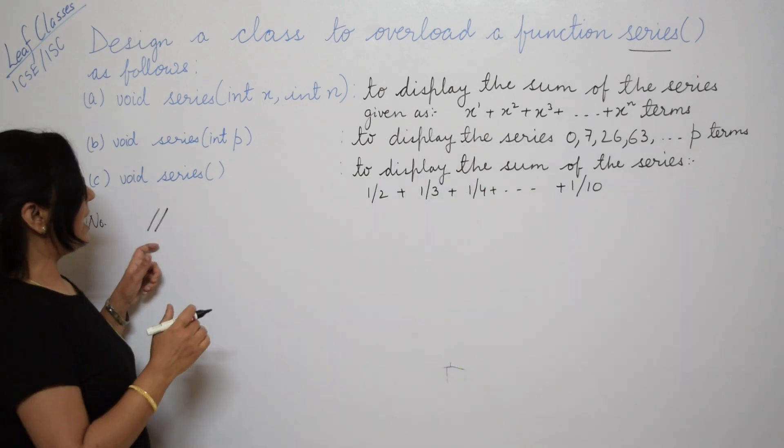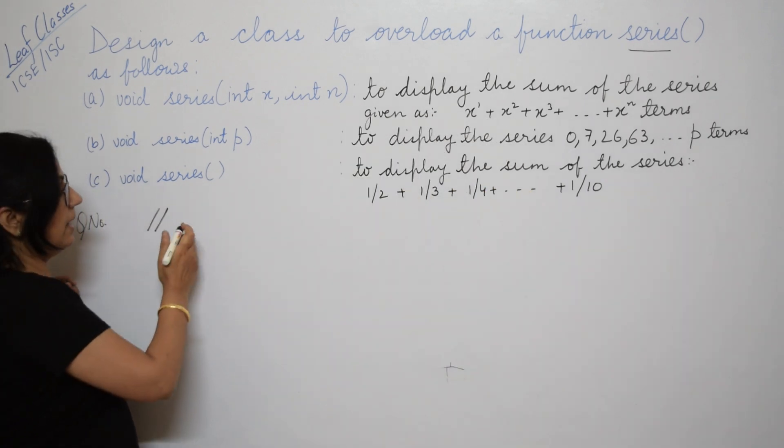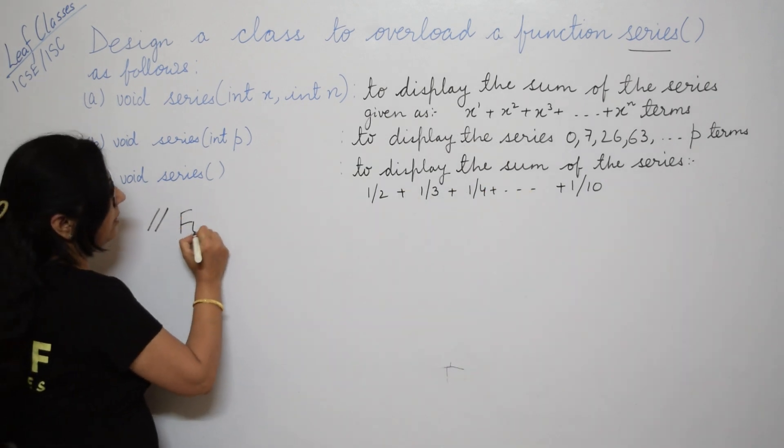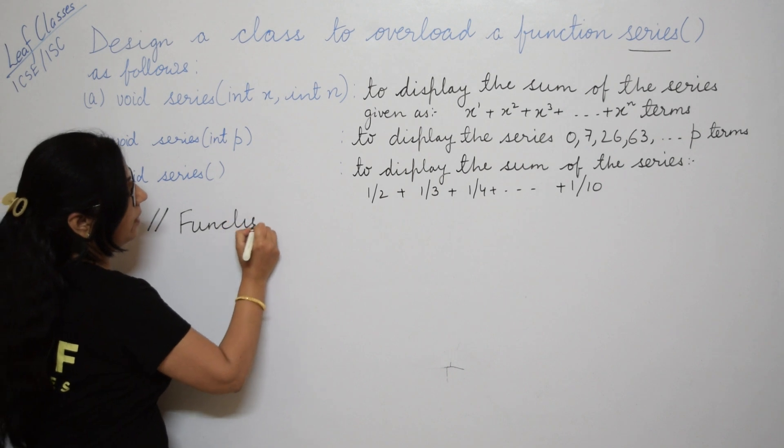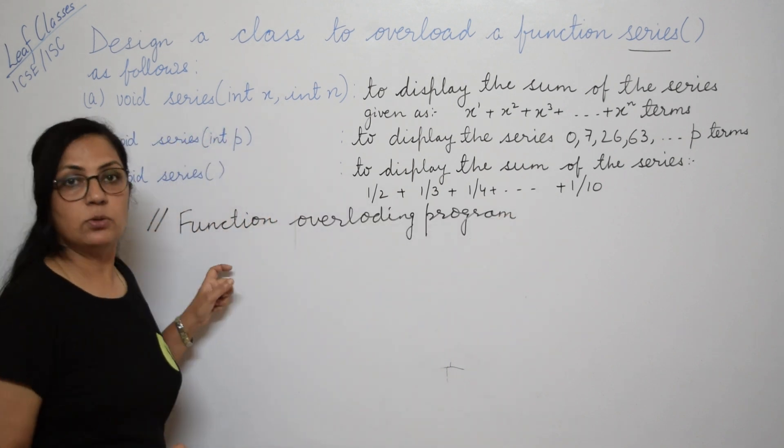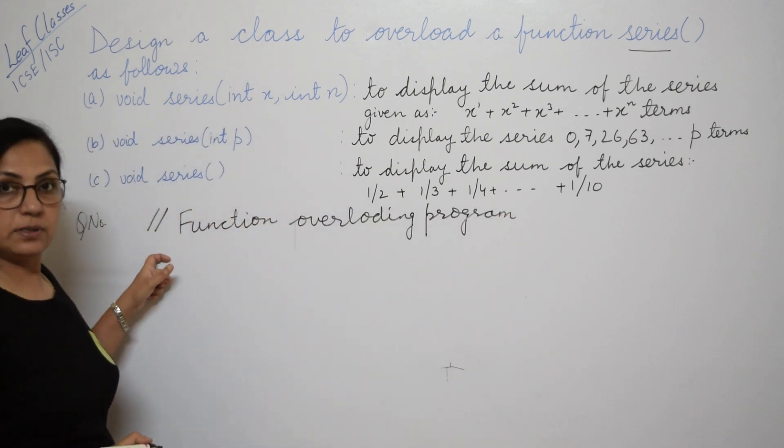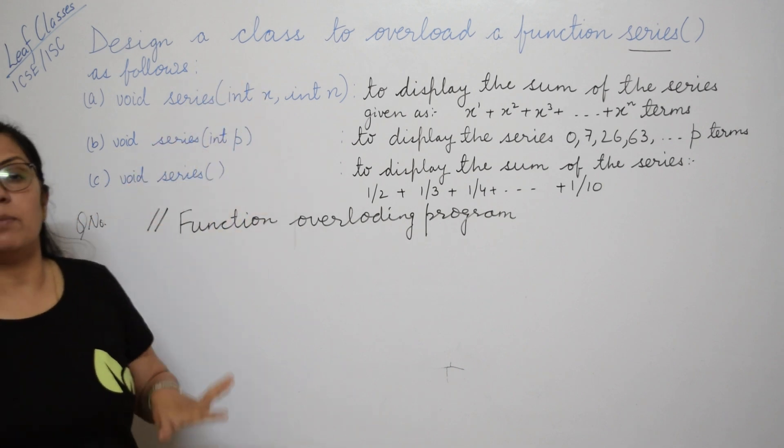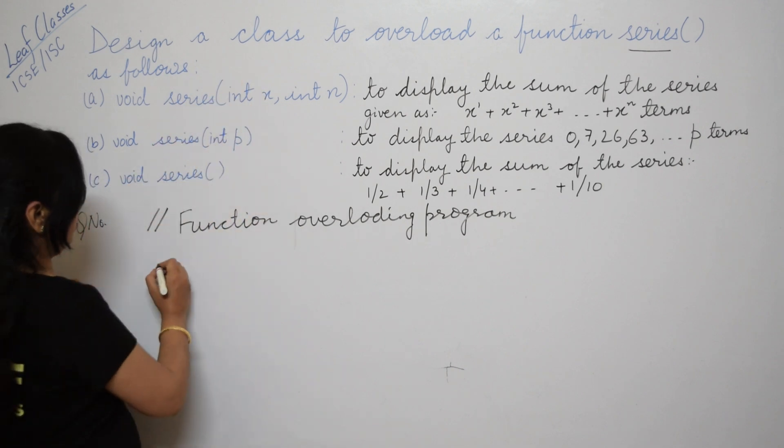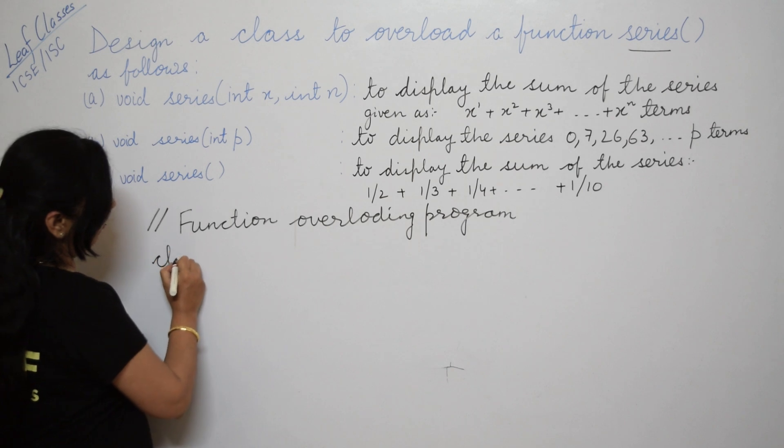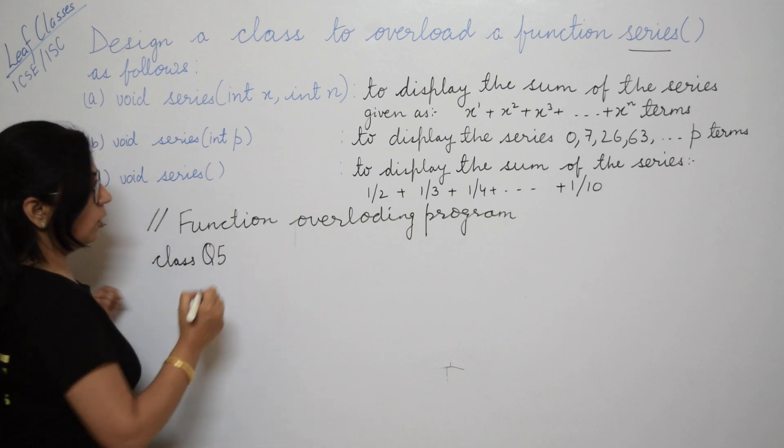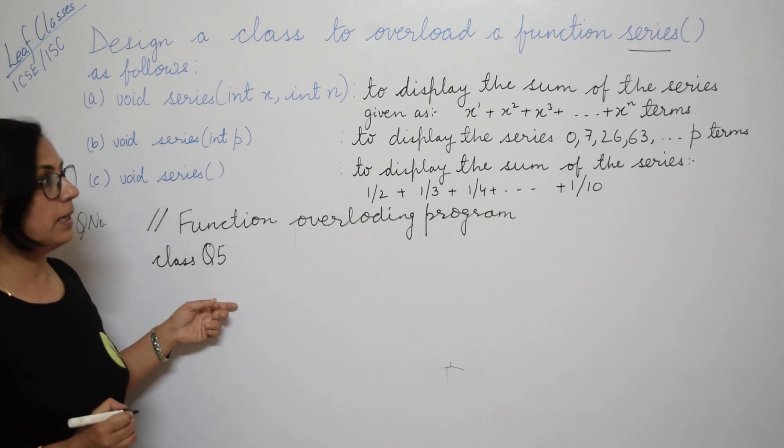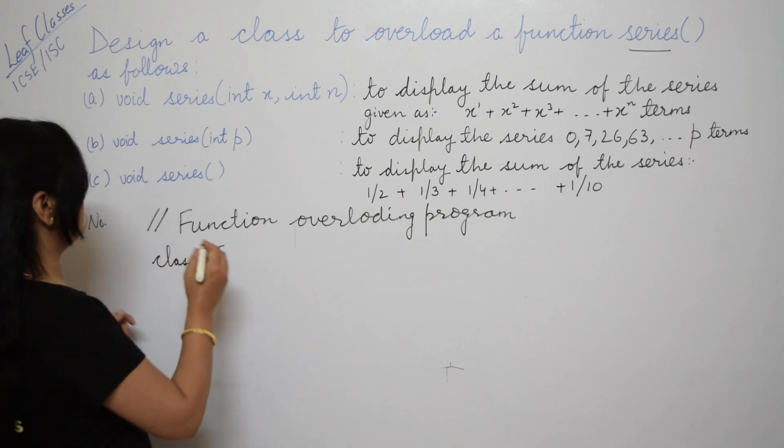Write the question number and start the program with a comment entry using double slash sign. You can write function overloading program. I always recommend giving the comment entry as the first statement. If you notice, the class name is not mentioned, so you can give a class name of your choice or write Q5.